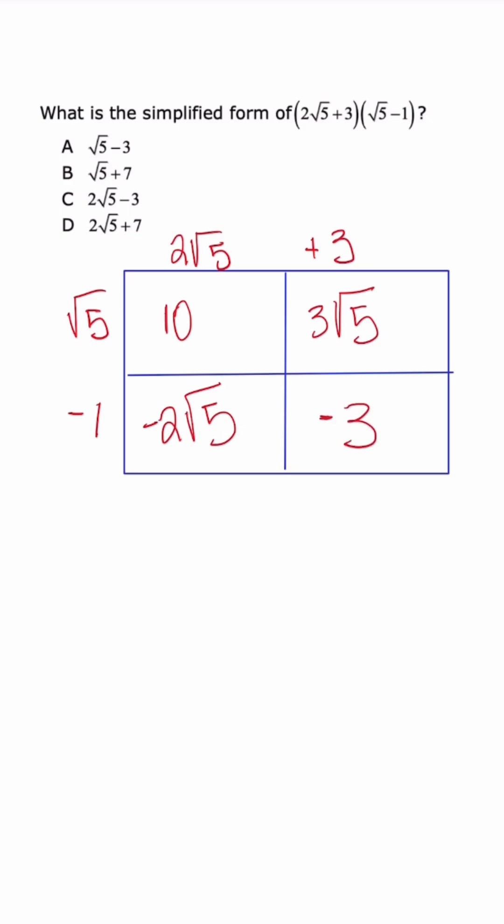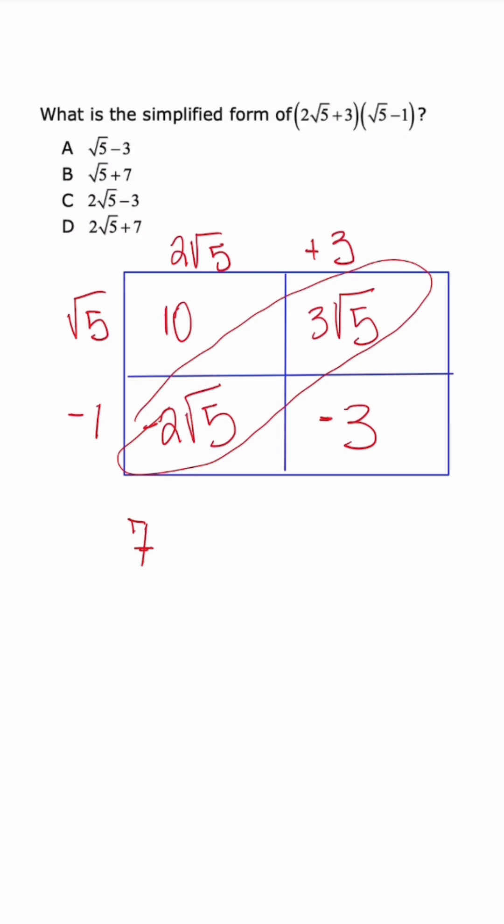Now, when I combine my like terms, we're going to have 7, right? That's 10 minus 3. And then 3√5 minus 2√5 is just going to be plus √5.